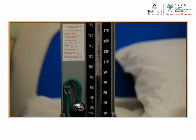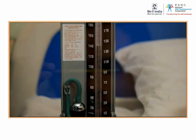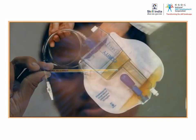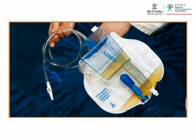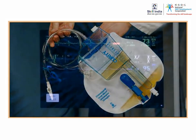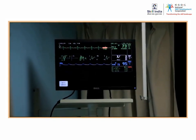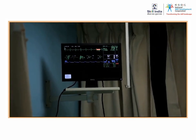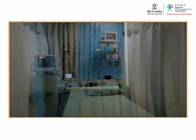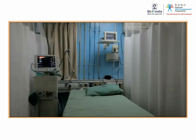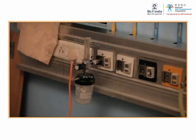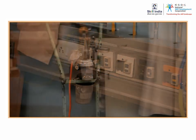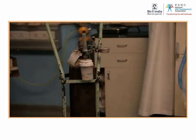The ICU also has equipment to measure blood pressure, body temperature, urine output, and other vital signs and functions of the body. Support equipment like a ventilator is available if the patient is unable to breathe.